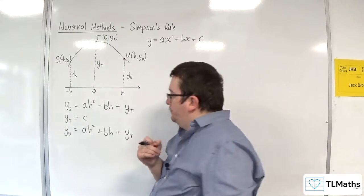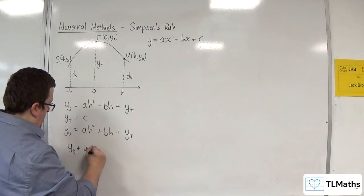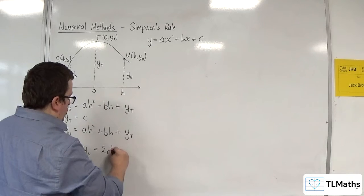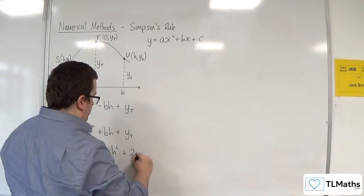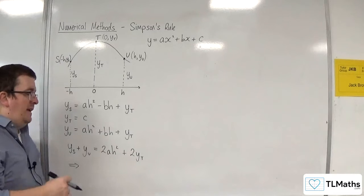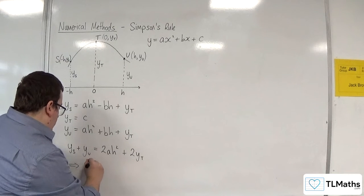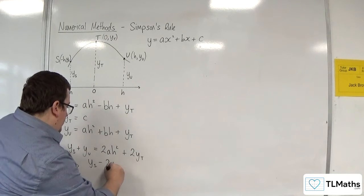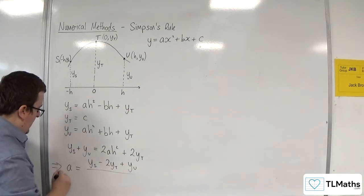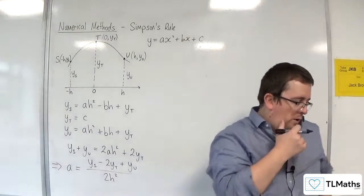Now, what I'm going to do is I'm going to add these two equations together. Because what that will do is it will knock out the bh's for me. And I'm going to get ys plus yu equals two lots of ah squared plus two lots of yt. And I'm going to rearrange this to get the a. So, allowing me to write a in terms of the y's and the h. So, I'm going to get a equals ys minus 2yt plus yu over 2h squared.